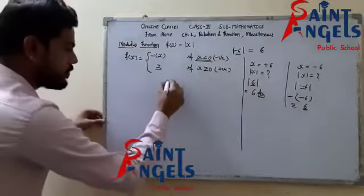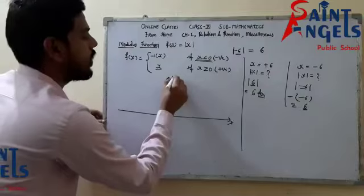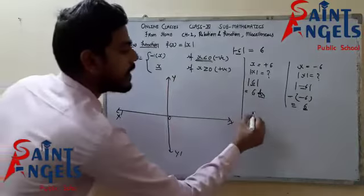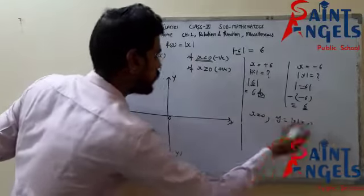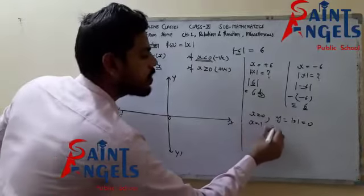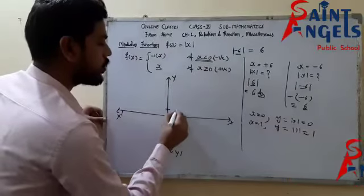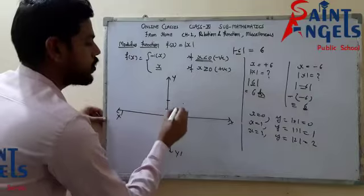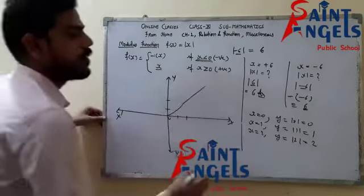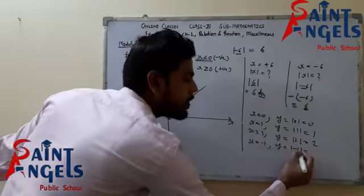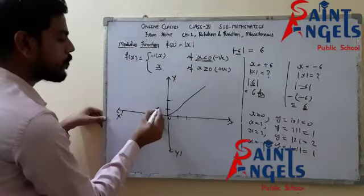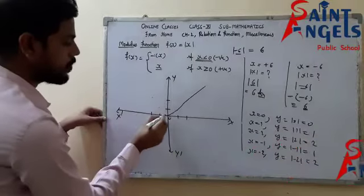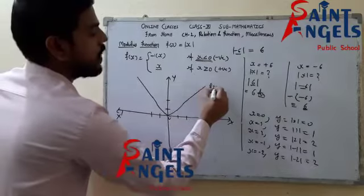Now we will look at the graph of this function. We draw the x-axis, y-axis, negative x-axis, negative y-axis, and origin. When x = 0, y = mod 0 = 0, so point (0, 0). When x = 1, y = mod 1 = 1, so point (1, 1). When x = 2, y = mod 2 = 2, so point (2, 2). When x = -1, y = mod(-1) = positive 1, so point (-1, 1). When x = -2, y = mod(-2) = positive 2, so point (-2, 2). This is the graph of f(x) = mod x.